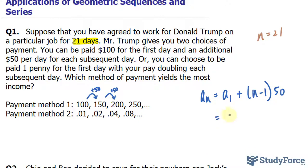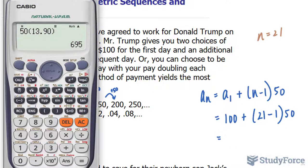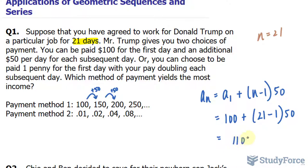Substituting what we know, that very first day will be 100 plus n — I'll replace with 21 — minus 1 times 50. Let's see how much you will be getting on the 21st day had you chosen payment method one. So we have 100 plus 21 minus 1, which is 20, times 50. We end up with $1,100 on the 21st day.